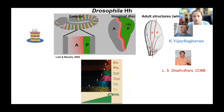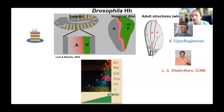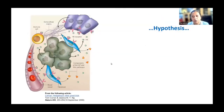In a developing embryo, hedgehog itself is expressed in the posterior region. The beautiful aspect about hedgehog is that it affects its presence and regulates the expression of target genes many cell diameters away, including back into the anterior part. Therefore it can affect both autocrine and paracrine signaling, with target gene expression ranging from one cell diameter away — like patched — to three cell diameters away like Dpp. The wing imaginal disc of Drosophila was used to conveniently observe this.